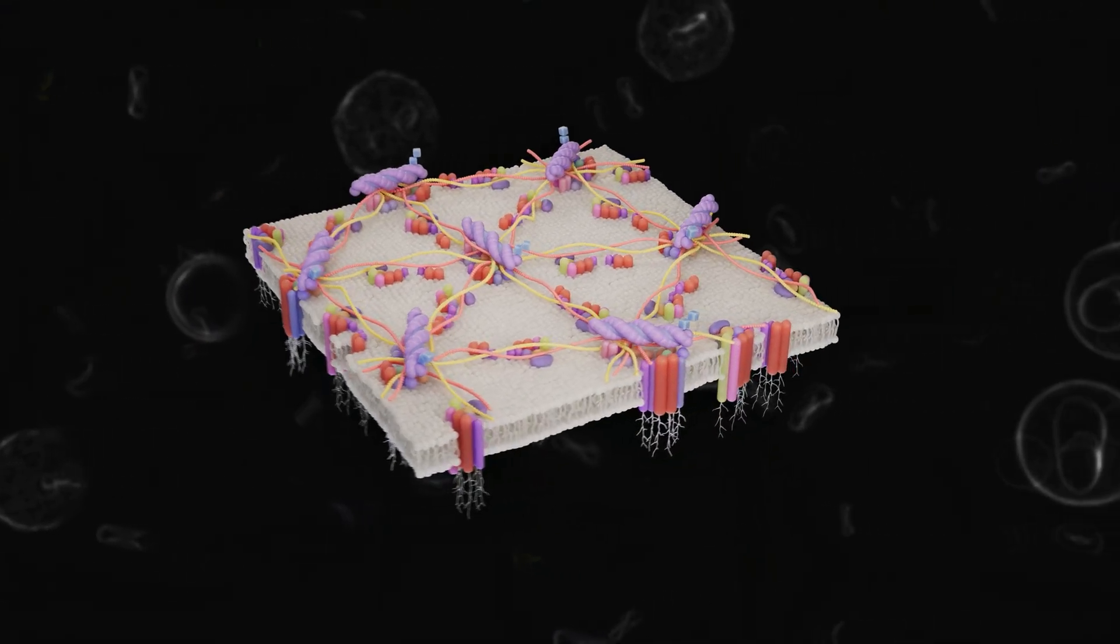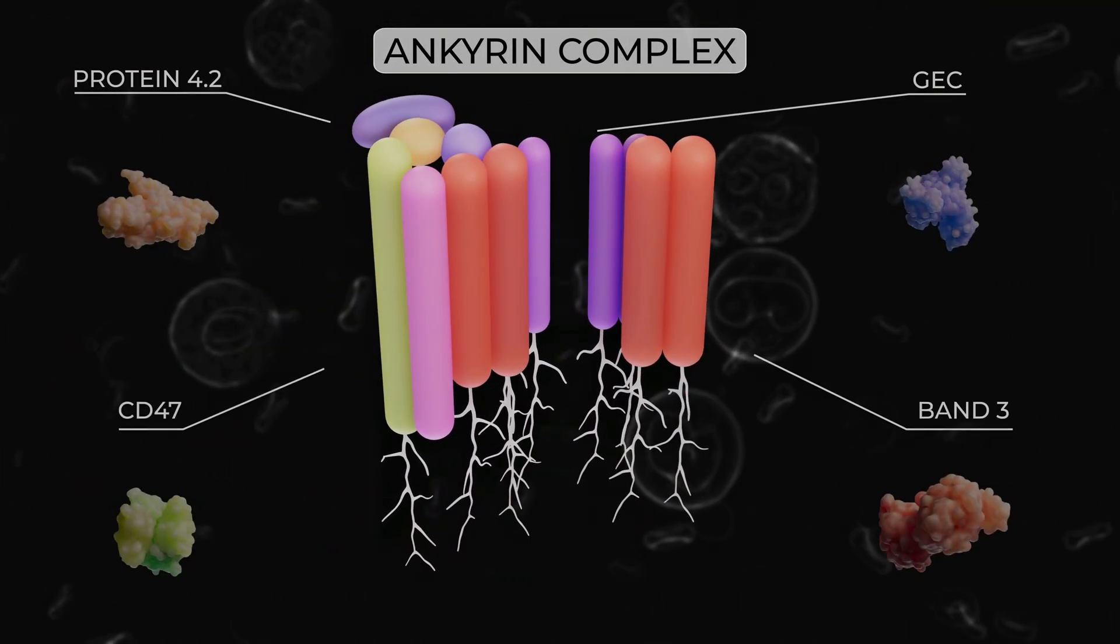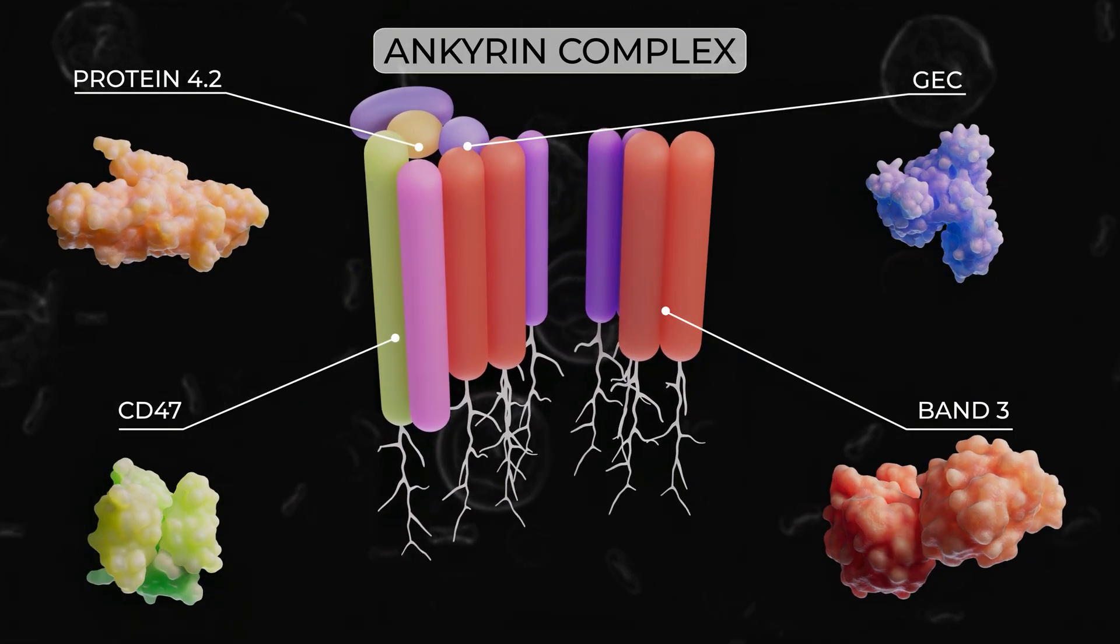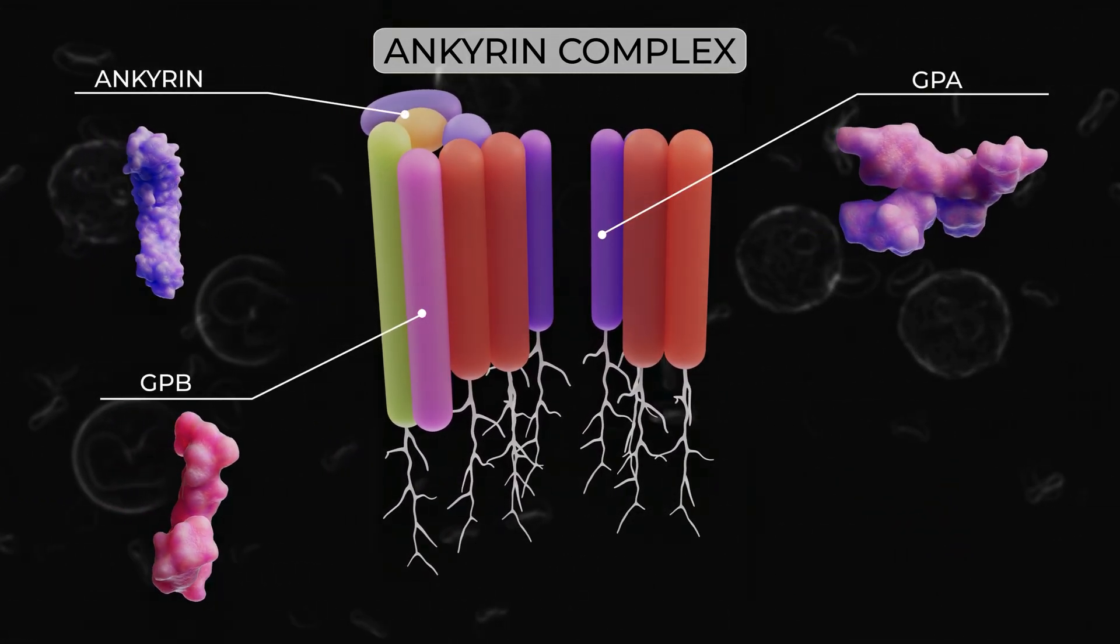Between the junctional complexes are ankyrin-based complexes. These are also multi-protein structures, including band 3, glycoforms, CD47, protein 4.2, and ankyrin.